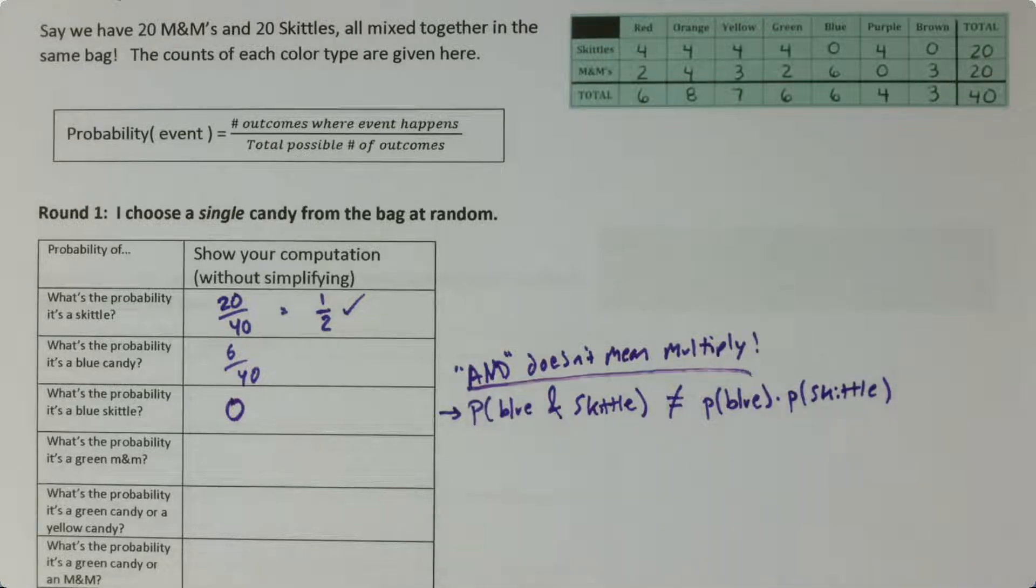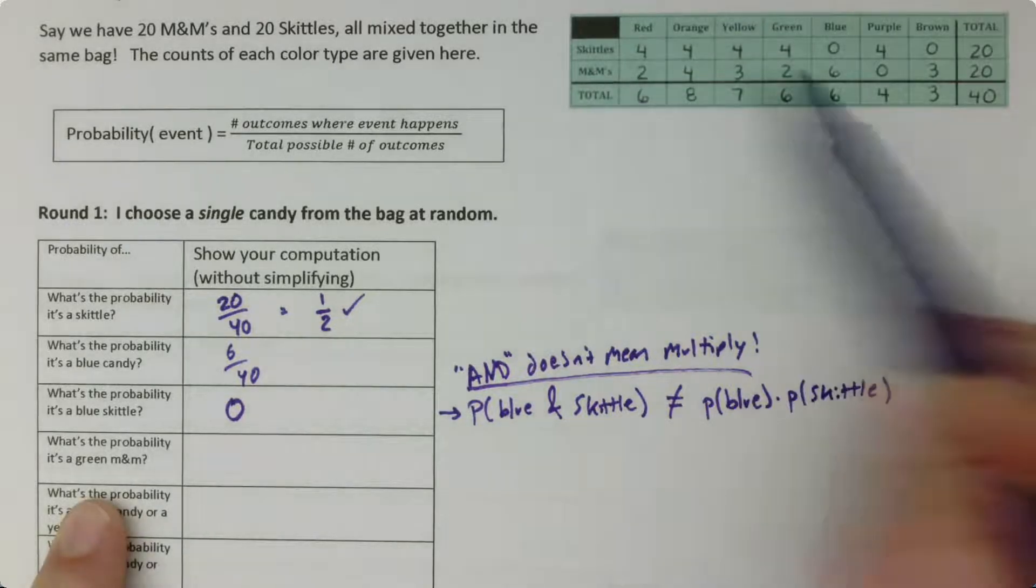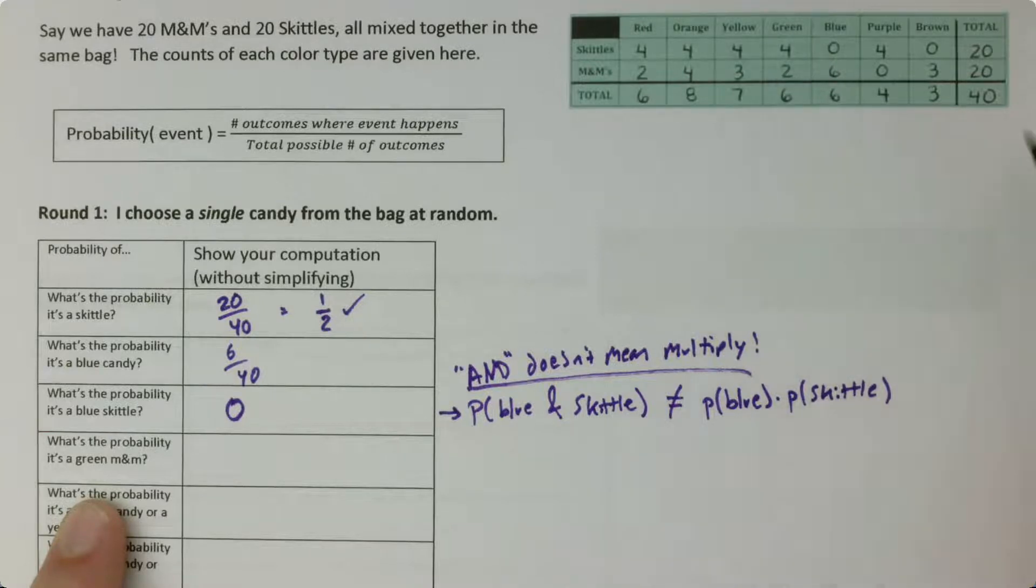So AND doesn't mean multiply. There is a certain situation where you'd want to multiply probabilities and we'll see that on the back page, but I just want to emphasize that all the time you should think about what it is that you're trying to find the probability of and do what makes sense. Don't try and learn associations that will lead you to procedures that you use without thinking about them. So if we want to know the probability that our candy is both green and an M&M, all we have to do is look at how many candies are both green and M&Ms. That's two out of 40 candies we might draw total. So it's just the original probability equation all over again.